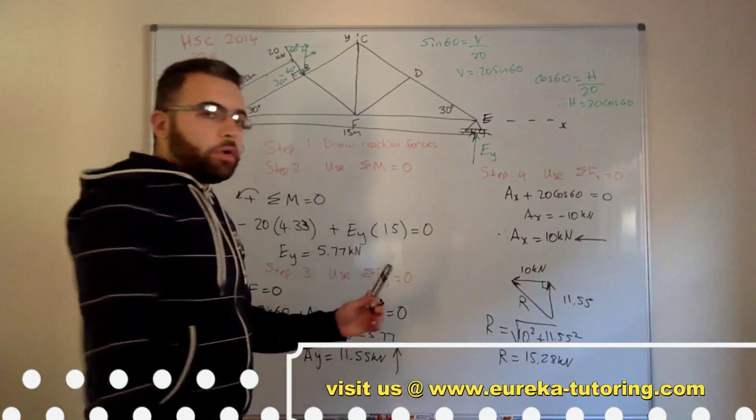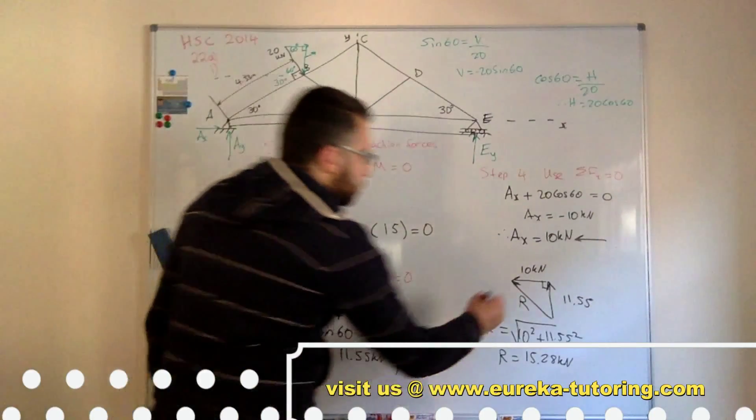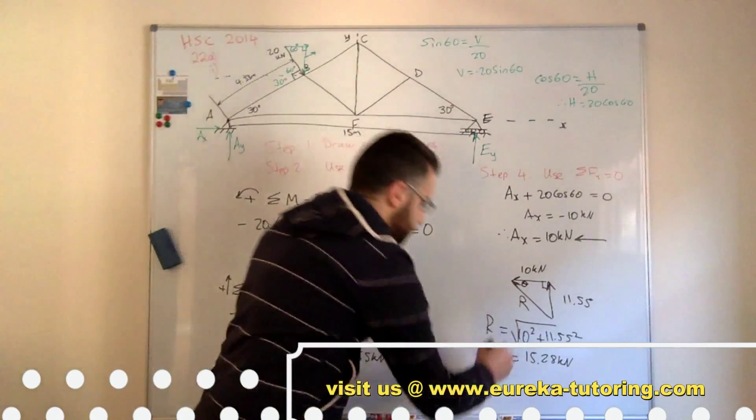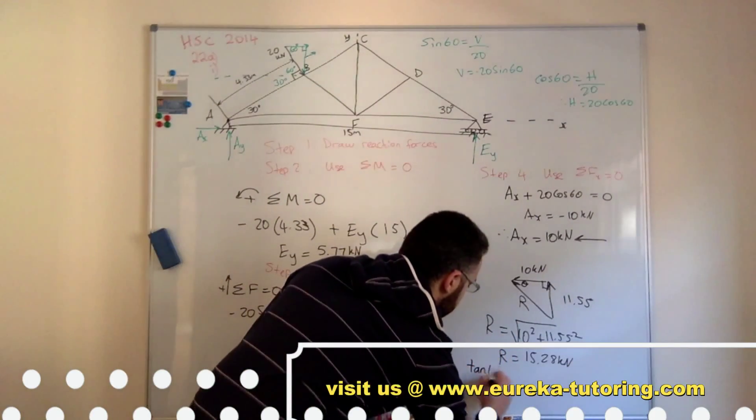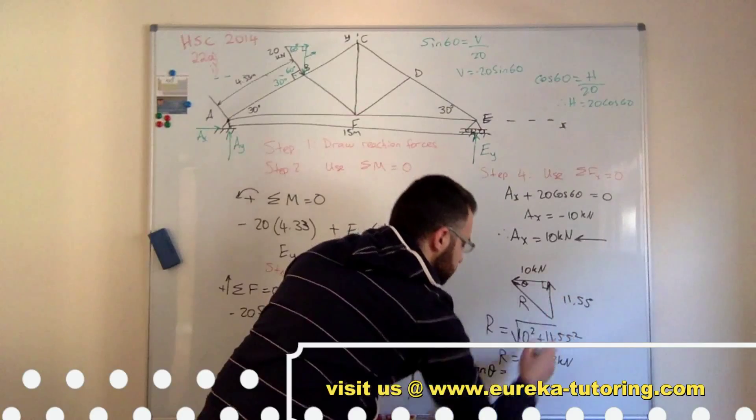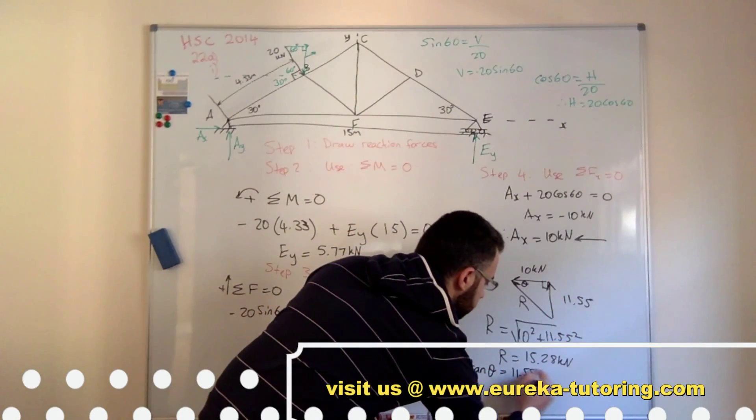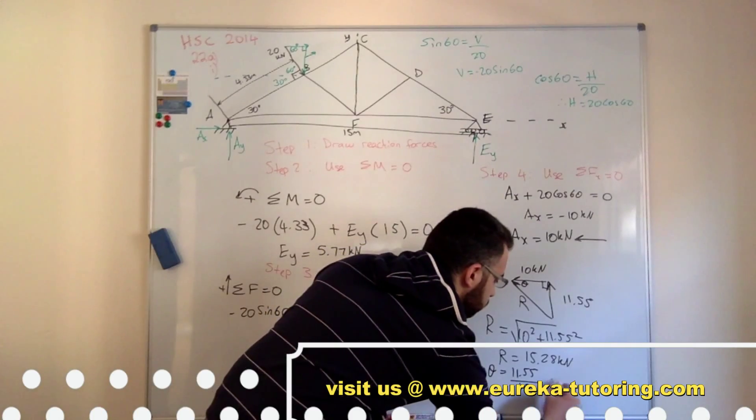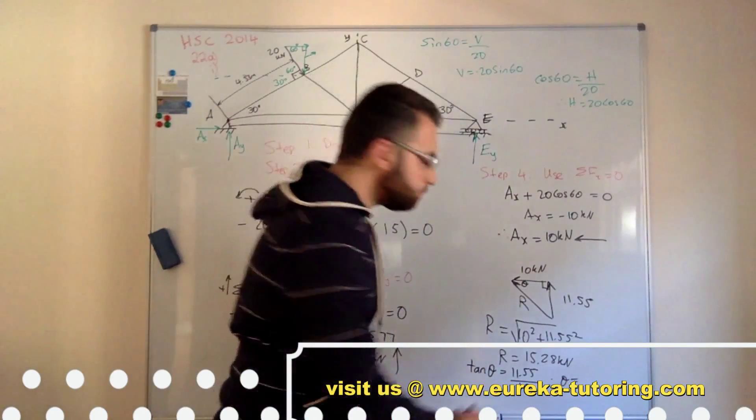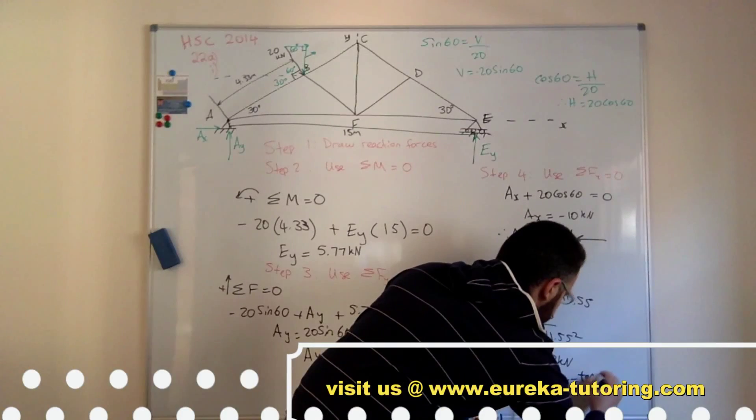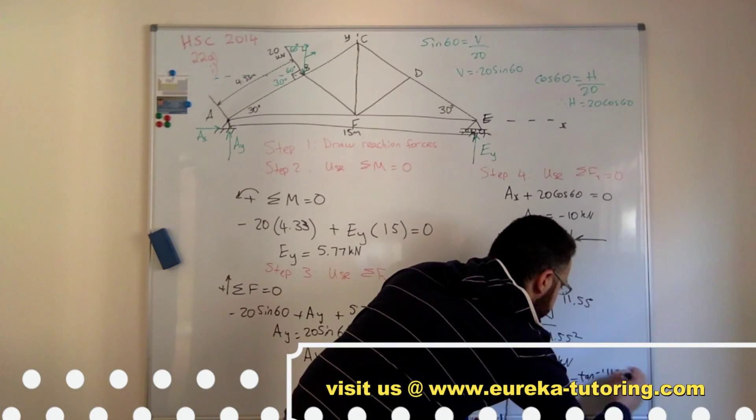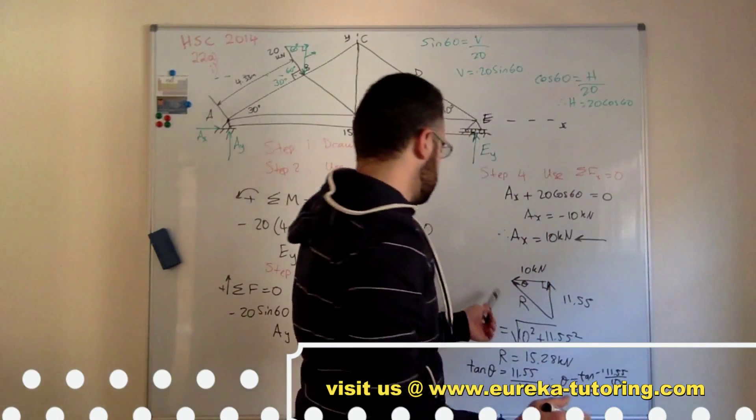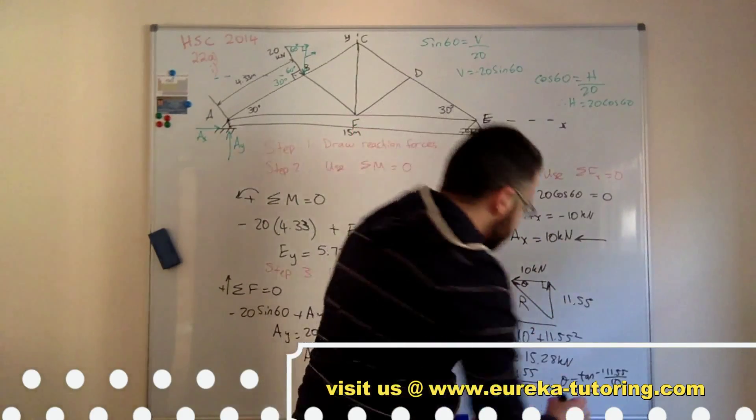Now with the direction, I need to find the angle. So this is the angle I'm after, because under the horizontal. So we use tan. So tan theta equals opposite over adjacent. So 11.5 over 10. Therefore, theta equals tan inverse 11.55 over 10. Therefore, theta equals 49 degrees.